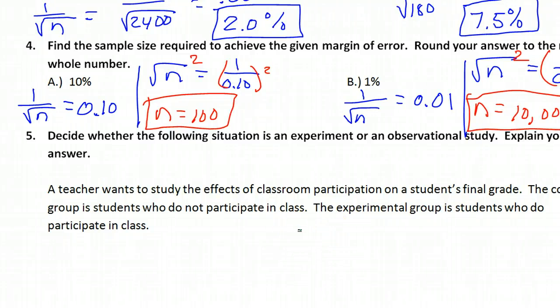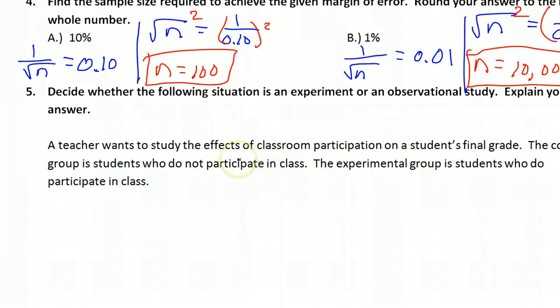Number five. Decide whether the following situation is an experiment or an observational study. Remember, it will be an experiment if the person who's measuring changes something. If the scientist or the researcher or whoever is collecting the information, if they decide how the participants are treated, then it's an experiment. If instead, they are just observing and not interfering, then it's an observational study.